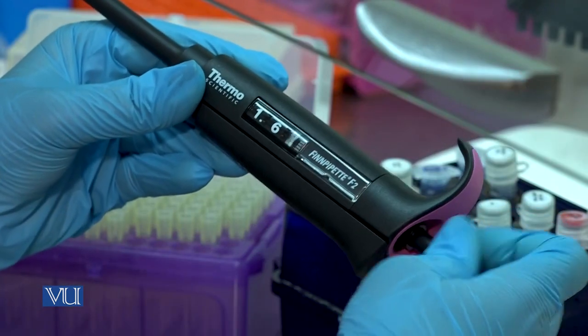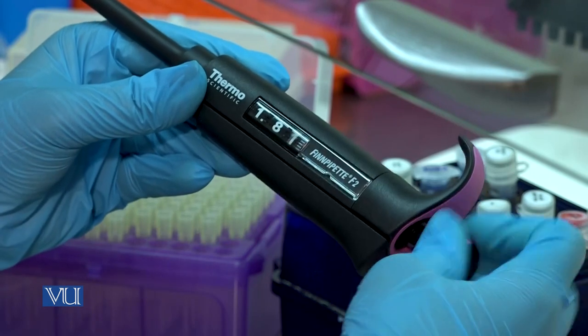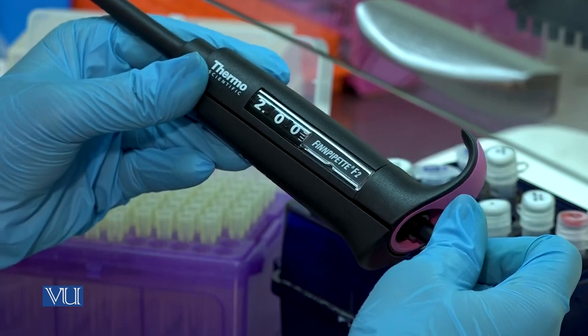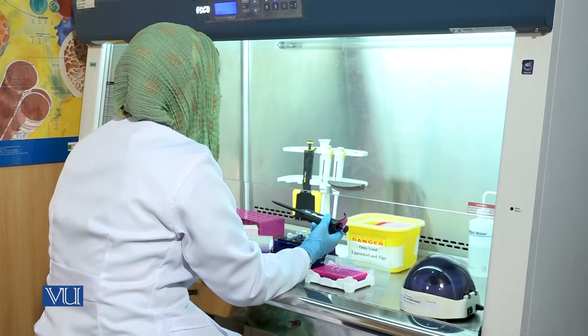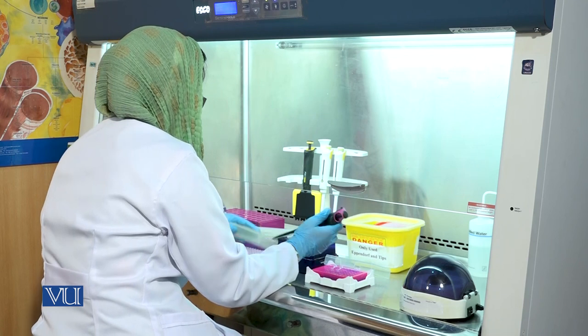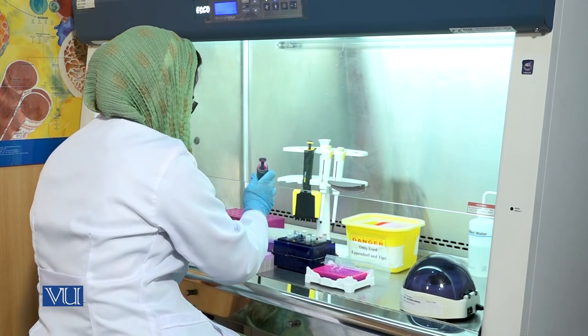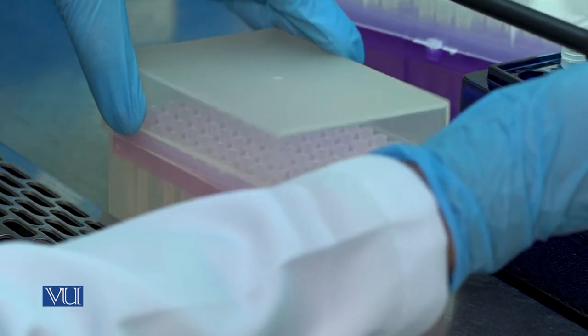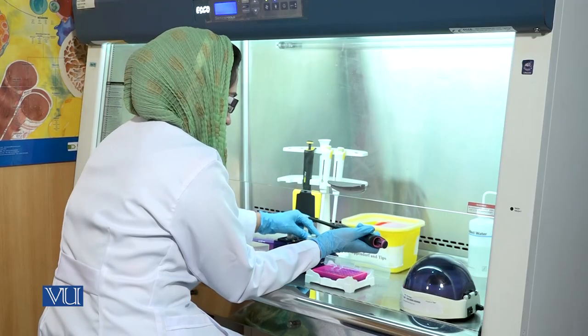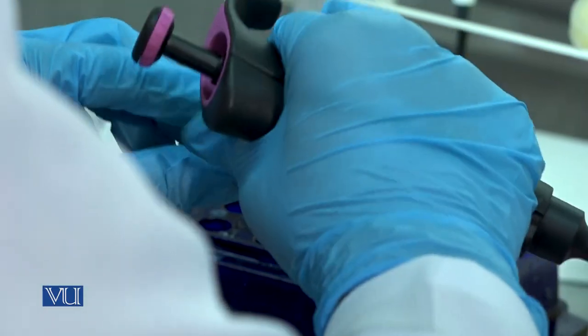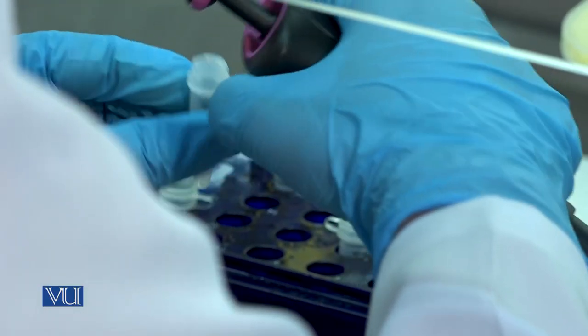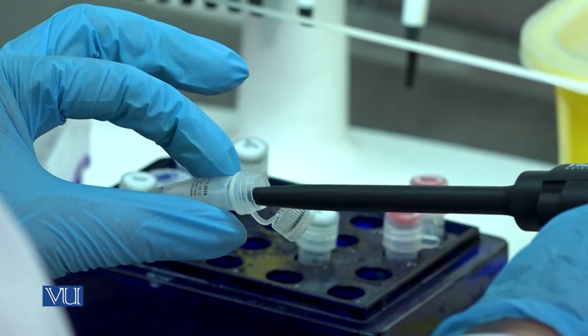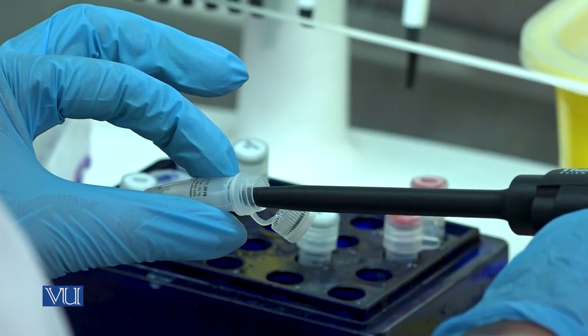Set the micropipette to 2 microliters. Take 2 microliters of dNTP mix and add it in the PCR tubes.